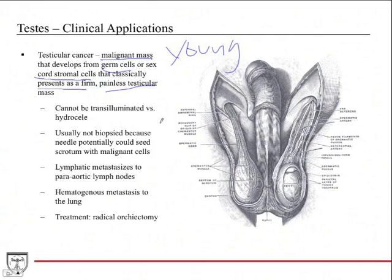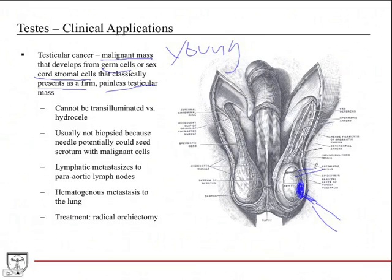On physical exam, besides the painless testicular mass, transillumination is negative — a light shined through the scrotum will not pass through a large tumor mass. Biopsy is typically not performed because inserting a needle risks seeding the scrotal tissue and skin with malignant cells, potentially causing scrotal cancer. The first step in management is ultrasound to confirm, followed by surgery to remove the tumor. Lymphatic metastasis tends to go to the para-aortic lymph nodes. Hematogenous spread goes to the lung, so a patient may present with shortness of breath, cough, or hemoptysis.